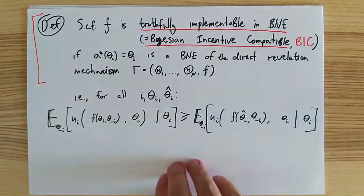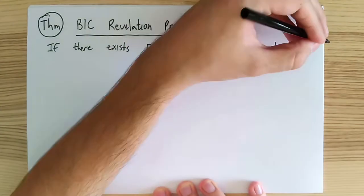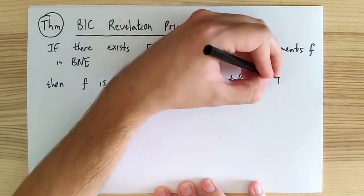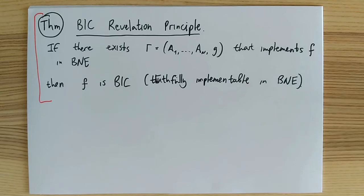Now we can state the revelation principle. Its statement is analogous to the revelation principle for dominant strategies and incentive compatible mechanisms. It says that if some social choice function f is implemented by some mechanism gamma in Bayes Nash equilibrium, then it can also be implemented in Bayes Nash equilibrium by a direct mechanism. The proof is completely analogous to the proof for dominant strategies and consists of showing that if Bayesian incentive compatibility constraints are satisfied for some mechanism, then they would also be satisfied for a direct mechanism.